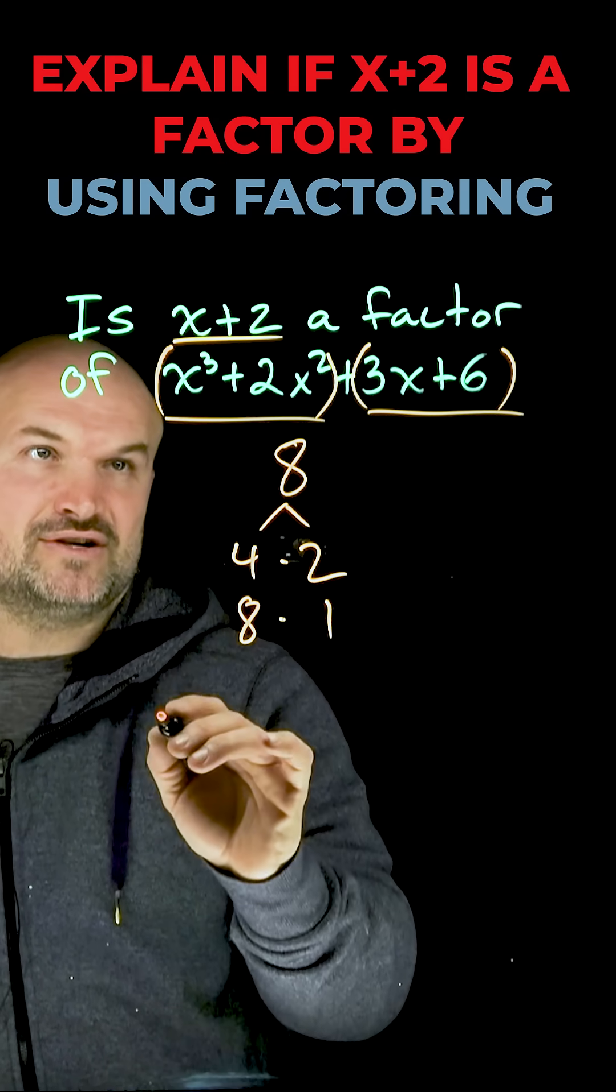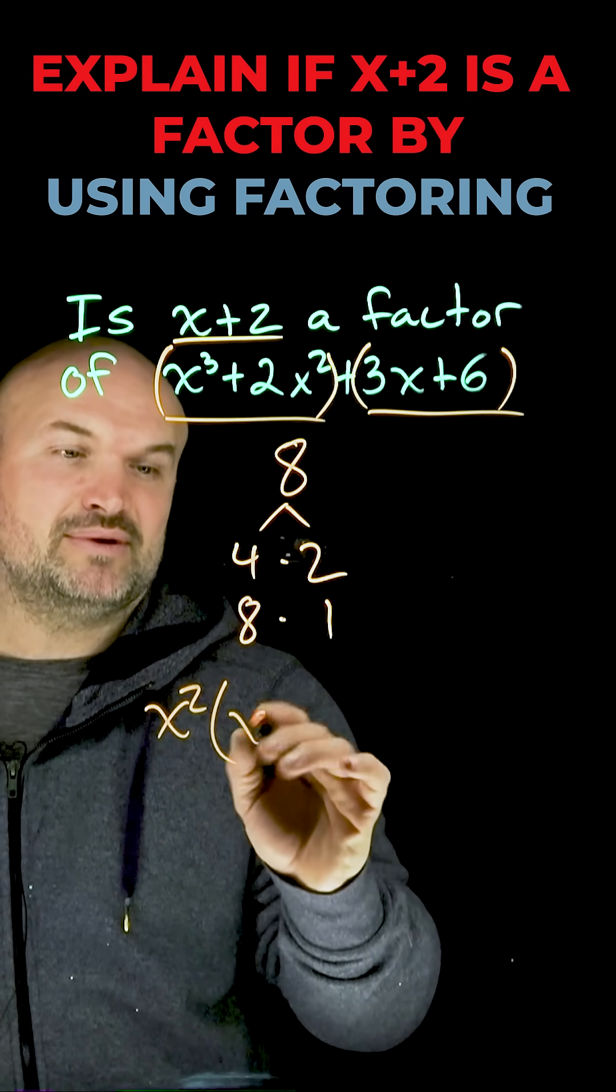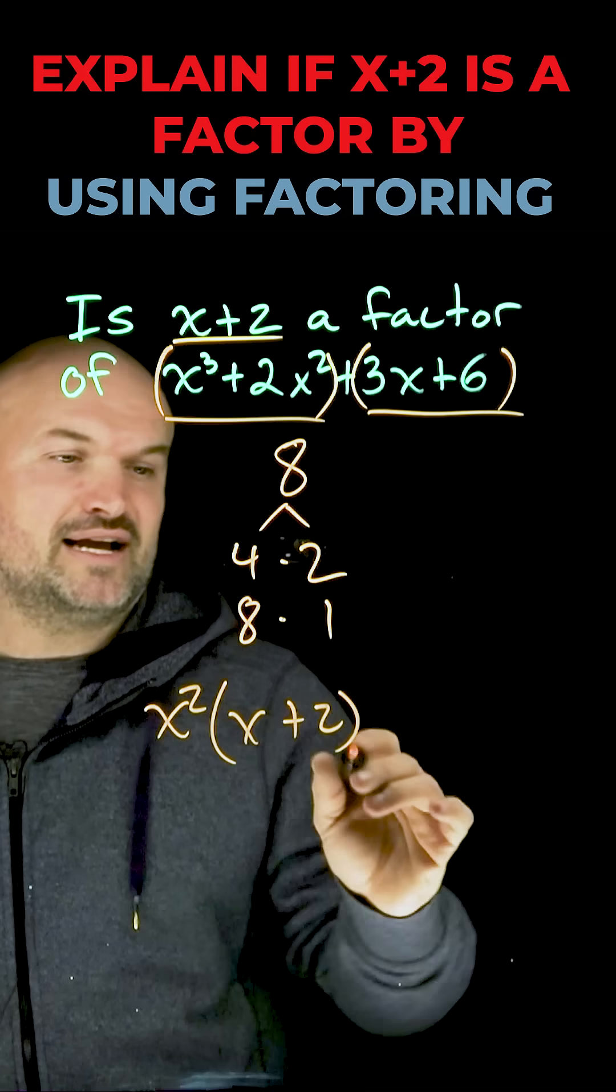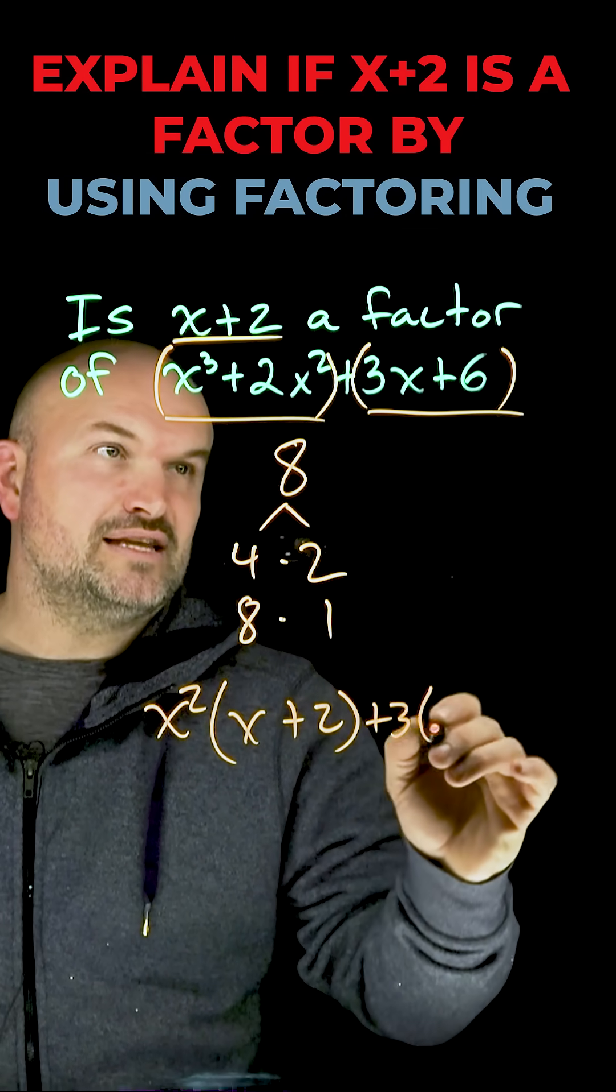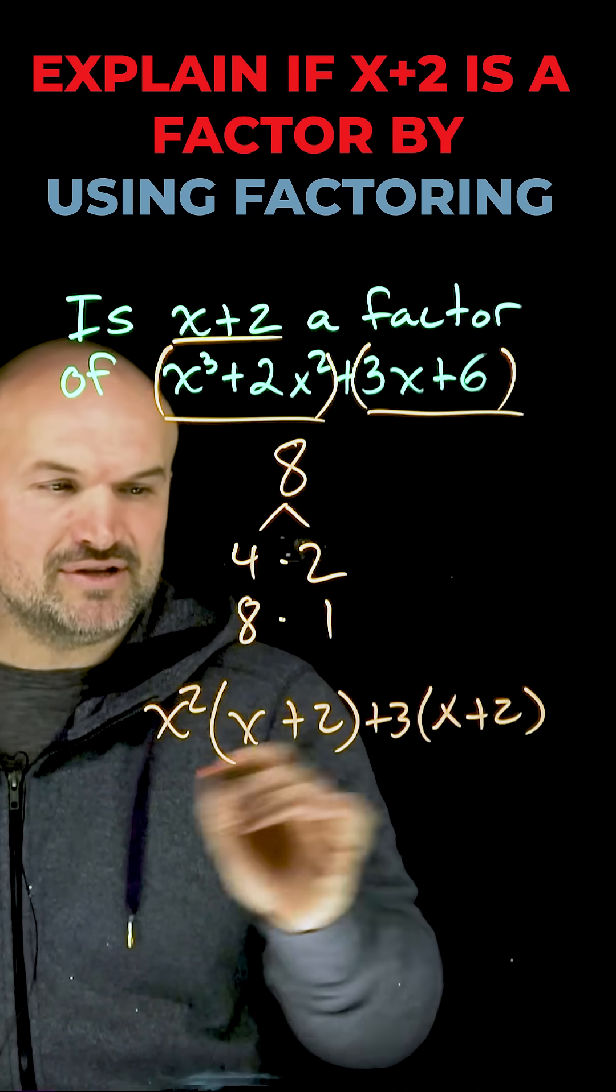Here, I can factor out x². That's going to leave me with x+2. Over here, I can factor out a positive 3. That's going to leave me with x+2.